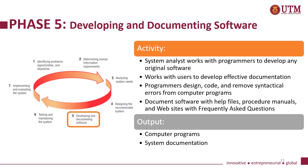Phase five: developing and documenting software. There are four main activities. One, system analysts work with programmers to develop any original software. Two, they work with users to develop effective documentation. Three, programmers design, code and remove syntactical errors from computer programs. Four, document software with help files, procedure manuals and websites with frequently asked questions. The main output for phase five is computer programs and the system documentation.